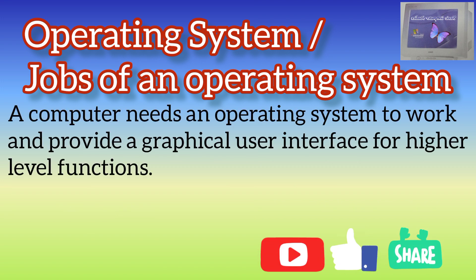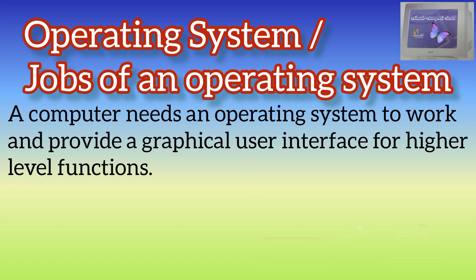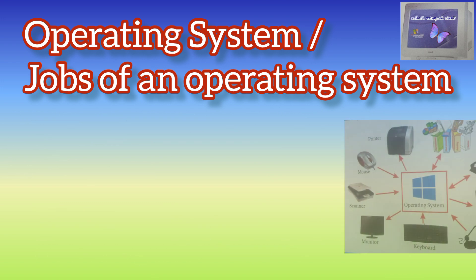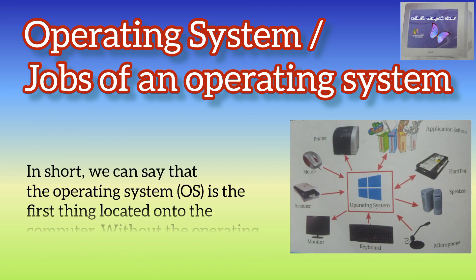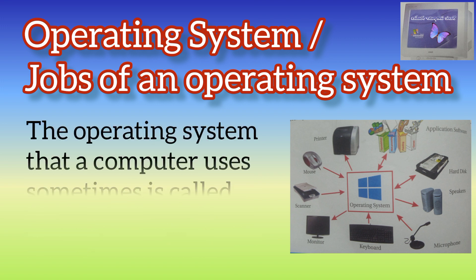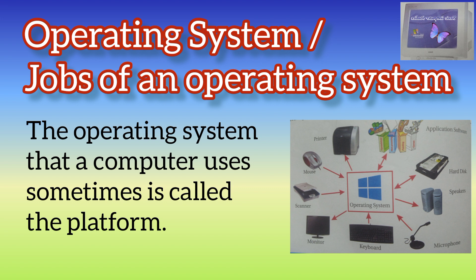A computer needs an operating system to work and provide a graphical user interface for higher level functions. The operating system resides on the computer's hard disk. In short, the operating system is the first thing loaded onto the computer. Without the operating system, a computer is useless. The operating system that a computer uses is sometimes called the platform.